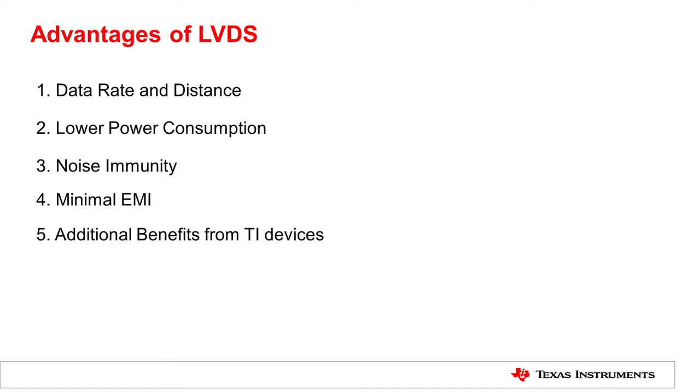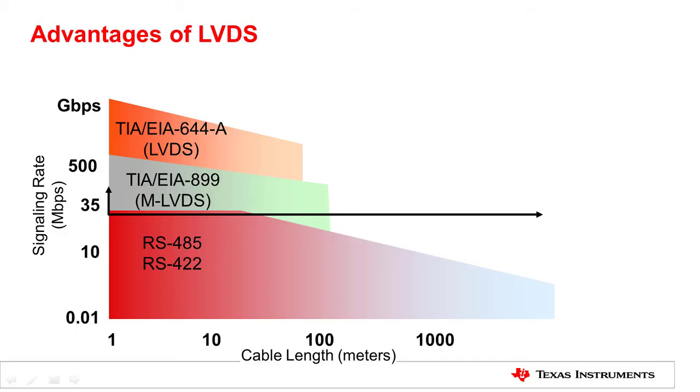First, let's start with data rate and distance. LVDS can achieve more than 1 gigabit per second. This data rate can be maintained over a long distance. Generally, data rate versus distance can be represented by this diagram.